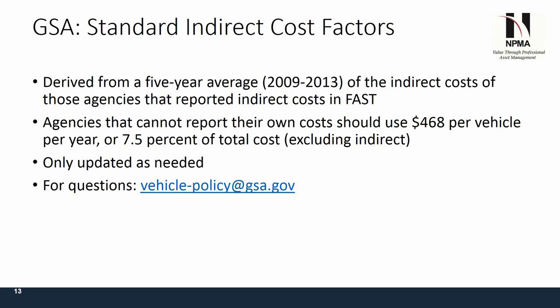The GSA standard indirect cost factors from FMR B38 were derived from a five-year average of 2009 to 2013 of indirect costs reported in FAST by the agencies. Agencies that cannot report their actual costs should use $468 per vehicle per year, or 7.5% of total cost excluding indirect. You should not have any costs already entered in indirect if you use those figures. Again, this is a bridge-gap measure intended to get you into the ballpark, not to give you a pass for not capturing the information.